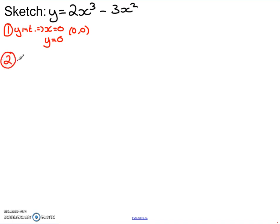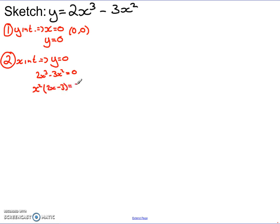Second, find the x-intercepts by setting y equal to 0. So 2x cubed minus 3x squared equals 0. This has a common factor of x squared, giving x squared times (2x minus 3) equals 0. From this we get x equals 0 and, solving 2x minus 3 equals 0, x equals 3/2. Those are the two points where the curve cuts the x-axis.